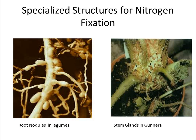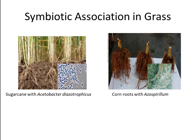Symbiotic nitrogen fixing organisms dwell within nodules, the special organs of the plant host. In the case of Gunnera, these organs are existing stem glands that develop independently of the symbiont. In the case of legumes and actinorhizal plants, the nitrogen fixing bacteria induce the plant to form root nodules. Grasses can also develop symbiotic relationships with nitrogen fixing organisms.